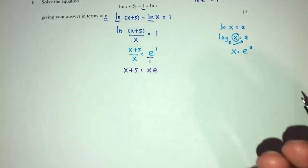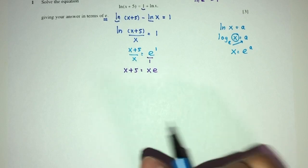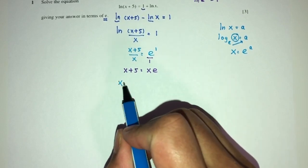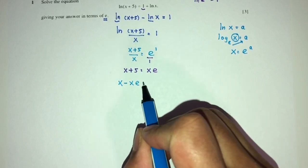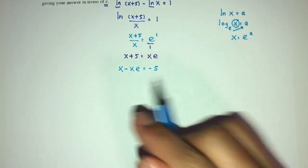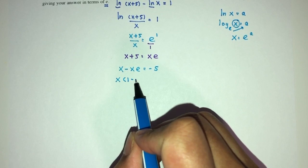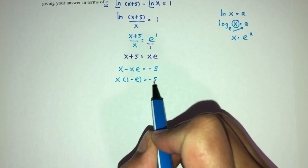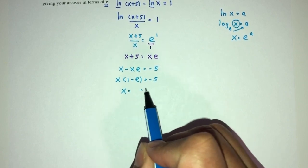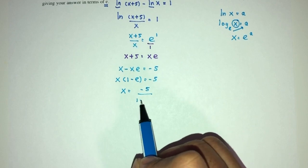Now send all the x to one side because we want to make them become the subject. So send this over here. x times exponential equal to minus 5. So finally, to factorize, you will have x times (1 minus exponential).